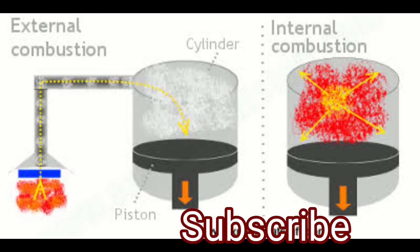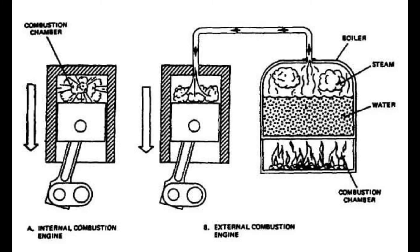An external heat engine refers to any engine that receives its heat from a source other than the fluid that makes the engine work. The most common type is the external combustion engine, which is used in many power plant designs. External heat engines are generally steam engines and differ from internal combustion engines in that the heat source is separate from the fluid that does work.